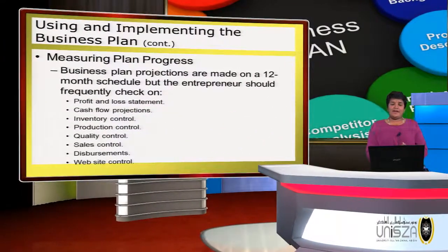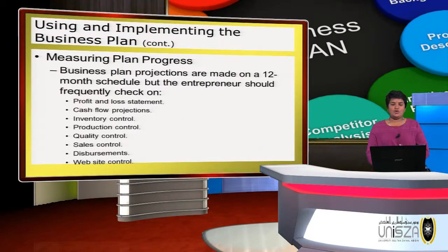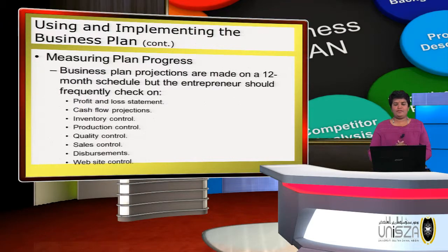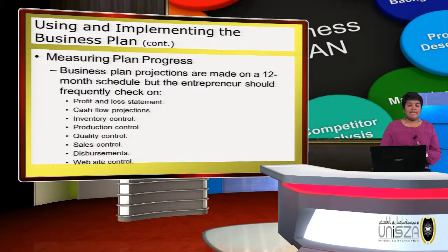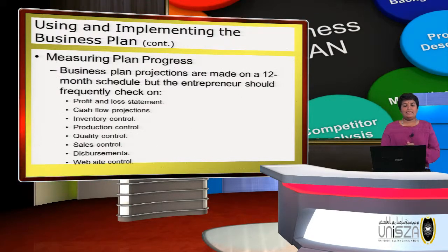For measuring plan progress, business plan projections are made on a 12-month schedule, but the entrepreneur should frequently check on the profit and loss statement, cash flow projection, inventory control, production control, quality control, sales control, and website control.